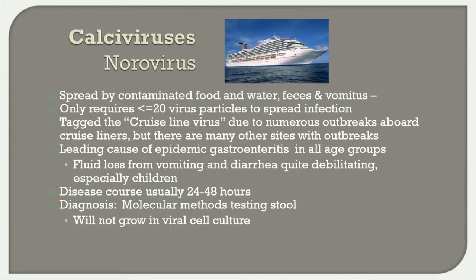Norovirus is spread by contaminated food and water, feces, and vomitus, requiring very few virus particles to spread — making it extremely contagious. It has been associated with cruise ship outbreaks but also many land-based settings. It is the leading cause of epidemic gastroenteritis in all age groups. The illness usually lasts 24 to 48 hours. Diagnosis uses stool for molecular methods; it will not grow in viral cell culture.